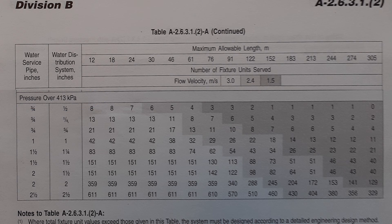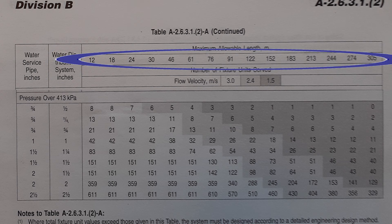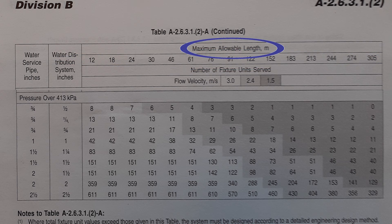The first column on the left hand side is water service pipe in inches. That is what we're going to use to size our water service pipe. The next one is water distribution system in inches. That's for sizing the water piping inside the building. Then we have a whole bunch of numbers going across the top which are maximum allowable length in meters.